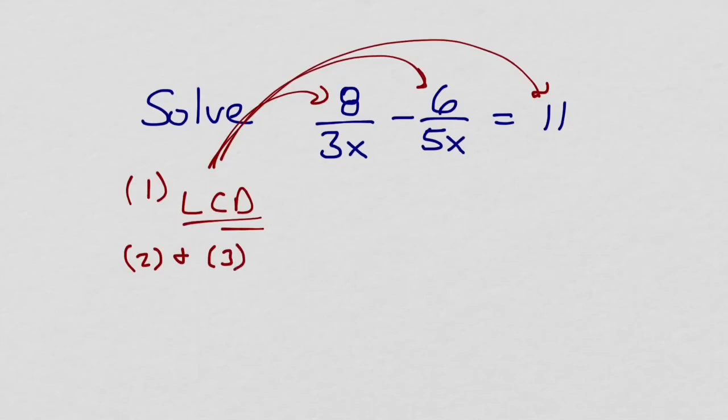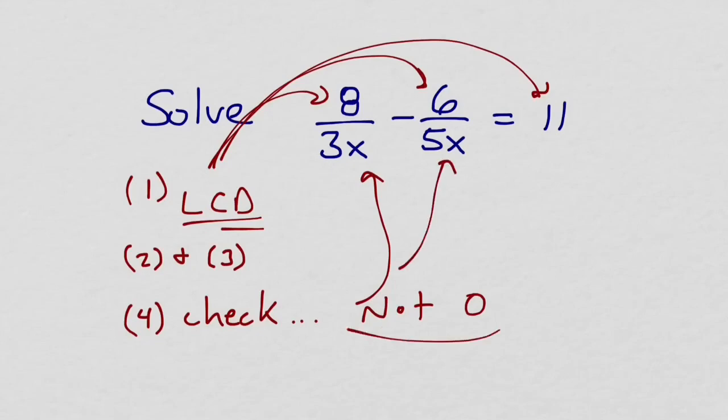And once we get a solution, I want to check in a couple of ways. I want to check and make sure that the denominator is not zero, that none of the denominators is equal to zero. And then we could also try to check the arithmetic and make sure that in fact both sides of the equation are equal to one another.